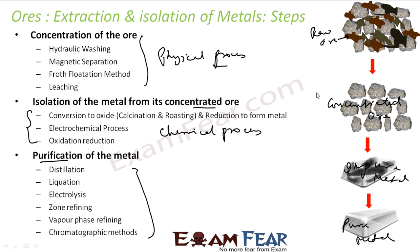So typically, first we get the raw ore which has a lot of impurities. We use a physical process — such as normal washing, magnetic separation, froth flotation, or leaching where you take advantage of solubility — to make it concentrated ore. Once you get the concentrated ore, you use a chemical process to get impure metal, which you then purify.